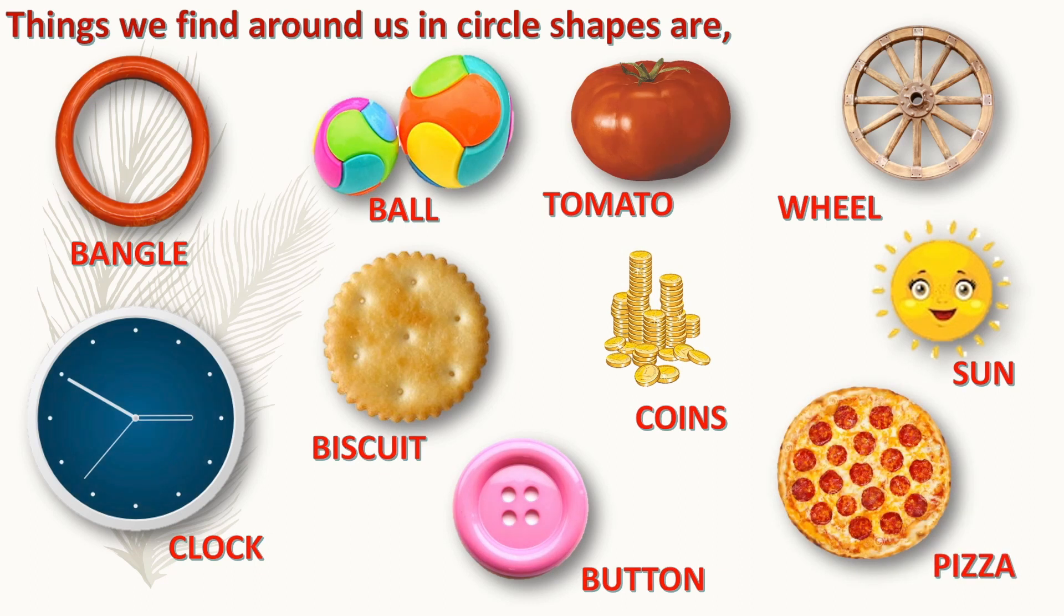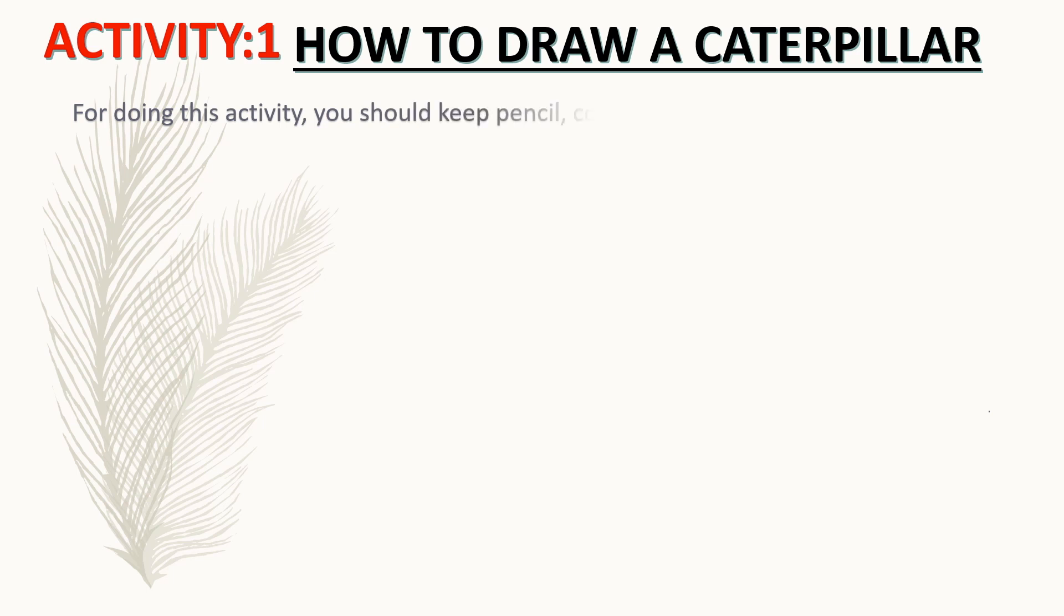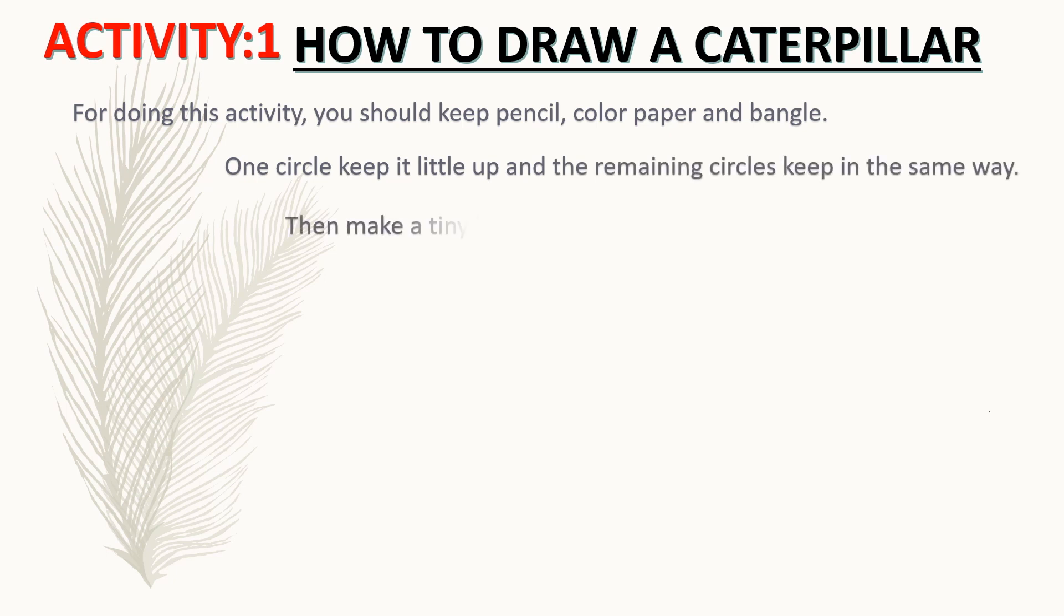Let us do some activity. Activity one: how to draw a caterpillar. For doing this activity you should keep pencil, color paper, and bangle. Instead of bangle you can keep any circular shape of objects.